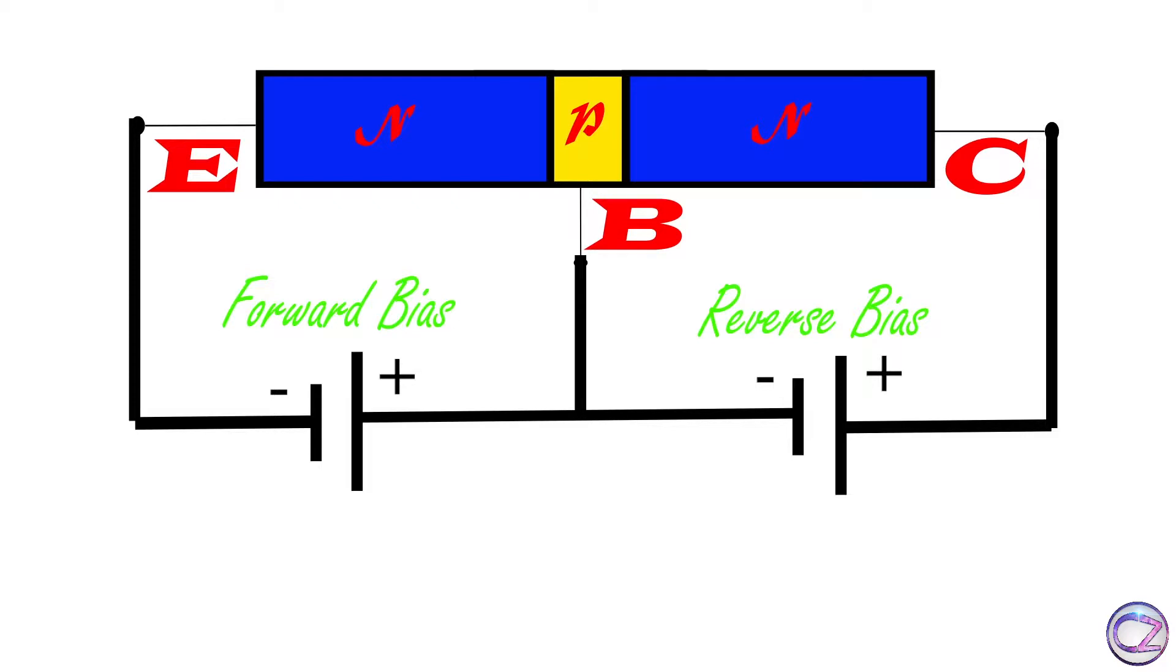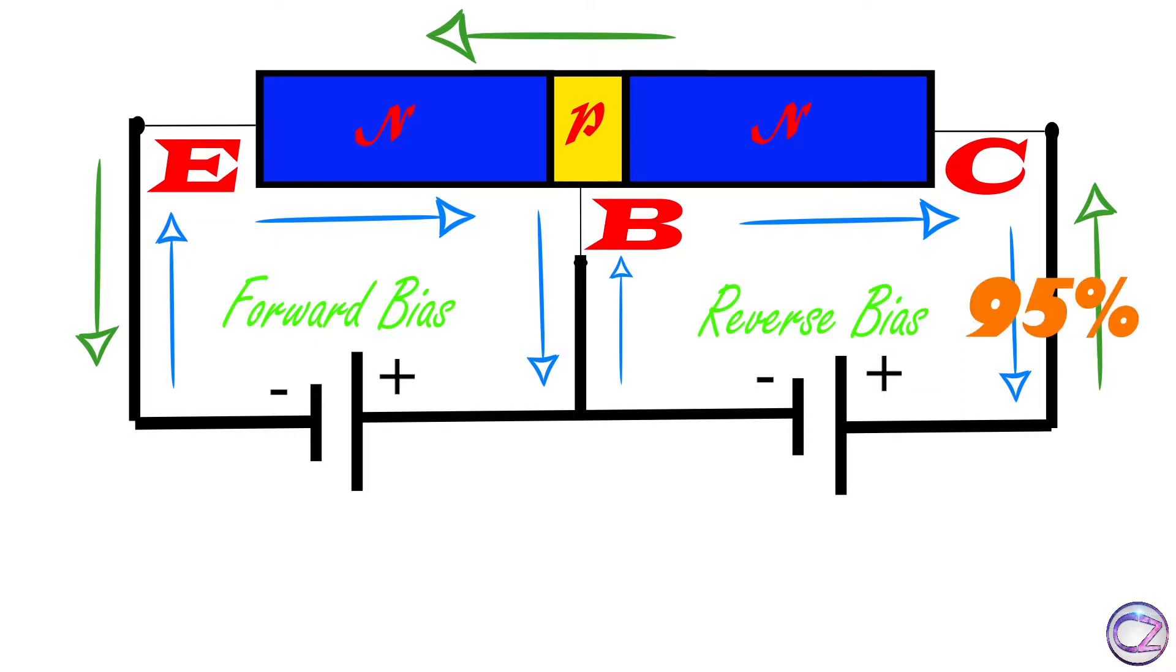Now look here, electrons are flowing clockwise, so current is flowing anticlockwise. The collector expresses 95% current, base expresses 5% current, and emitter expresses 100% current. Because initially 100% of electrons flow through the emitter, but at the base they divide their quantity. That's why we can say IE equals IB plus IC.